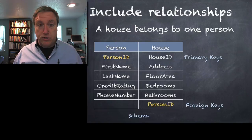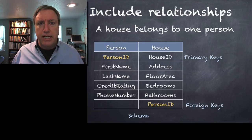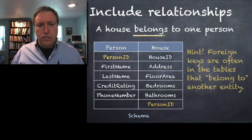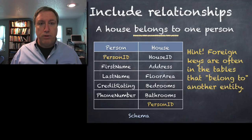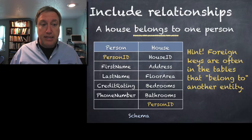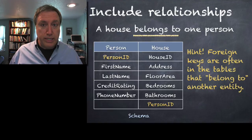Here's a hint because you're going to be looking at primary keys and foreign keys in your homework. Look for the rules that say 'belongs to.' A house belongs to one person — that might indicate a one-to-many relationship, and that might mean the house table is the place where you want to put your foreign key.